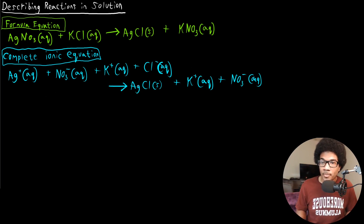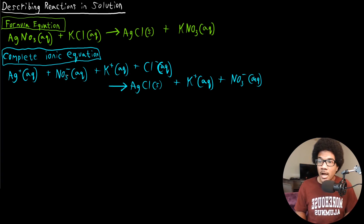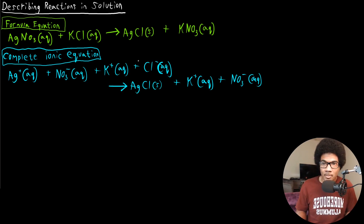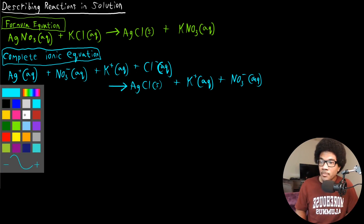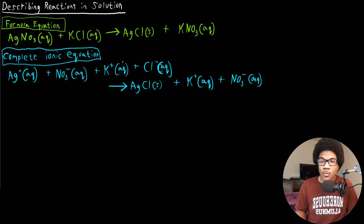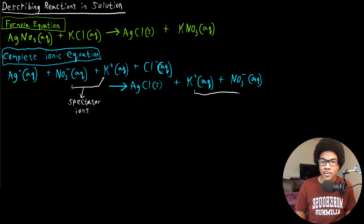What you'll notice is that in the products and the reactants, there are some ions that don't change at all. The nitrate anion is the exact same in the products and reactants, and the same thing for the potassium cation. If something doesn't change from reactants to products, we call these spectator ions. In this case, the potassium and nitrate ions are the spectator ions.